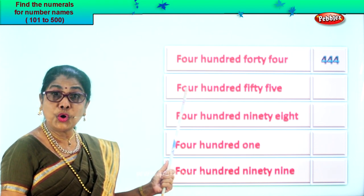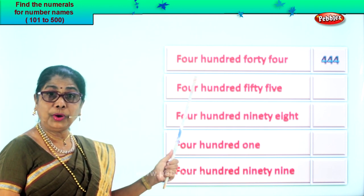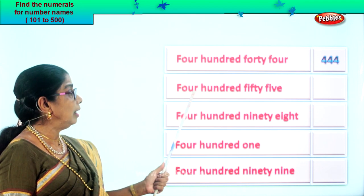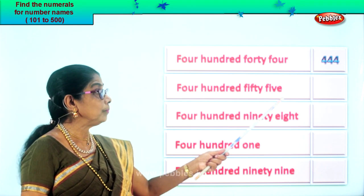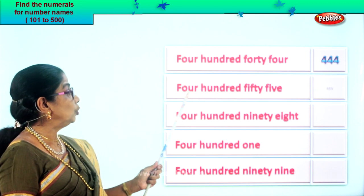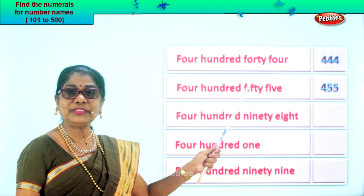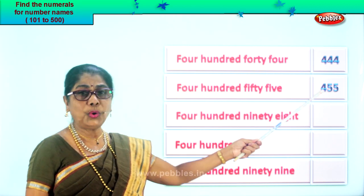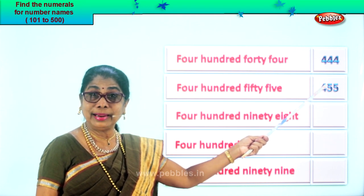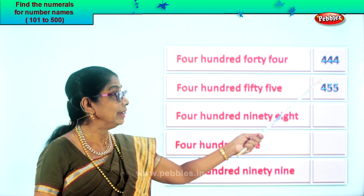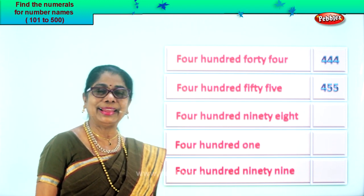Next one: four hundred fifty-five. Four in the hundreds place, fifty — five in the tens place, five in the ones place. So you have four, five, five. Four hundred fifty-five. Look at the numeral: four hundred fifty-five. Are you enjoying it?